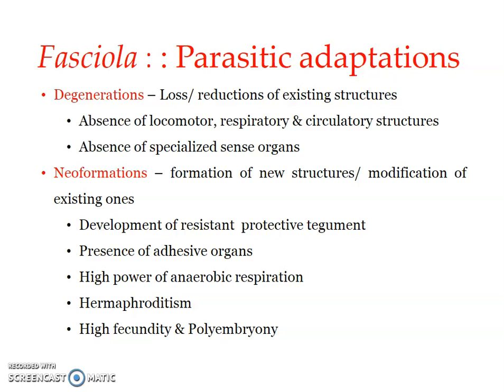Degenerations include two aspects. The first is the absence of locomotory, respiratory, and circulatory organs in Fasciola. The liver and bile ducts provide Fasciola a very safe and secure space to live — food and all requirements are fulfilled there. So it doesn't require to move about, and therefore locomotory structures are completely absent.